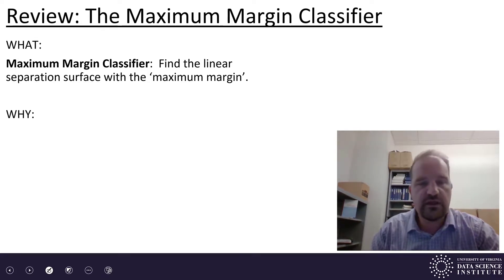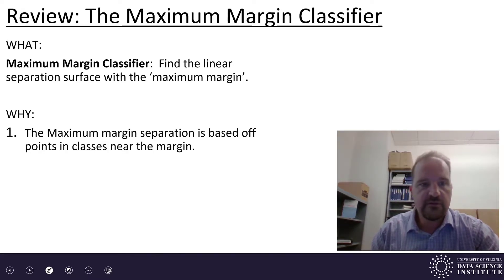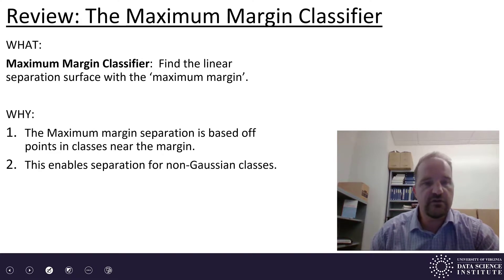Okay, so what have we talked about in this video today? We talked about the maximum margin classifier. It's a classifier where you find the linear separation surface with the maximum margin, and the margin is the distance to the closest points in each class. Why would we do this? The maximum margin separation is based off the points in the class near the margin. So, there's some good motivation for this separates using the points that matter most, the points that are the ones that are likely to be unclassified or classified improperly.